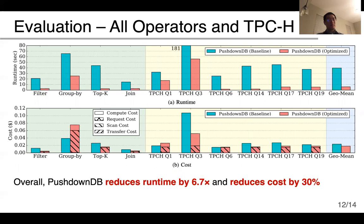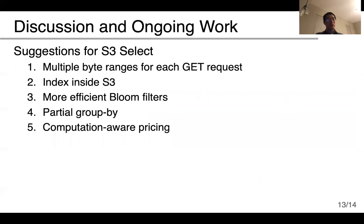Finally, this slide shows the performance comparison between baseline PushdownDB that does not use S3 Select and the optimized PushdownDB that does use S3 Select. We report individual operators including filtering, group-by, top-k, and join, as well as a subset of TPC-H queries, with both runtime and cost breakdown reported. Overall, by exploiting S3 Select, PushdownDB can reduce runtime by 6.7 times and reduce cost by 30%. In the paper, we also discuss suggestions to S3 that could further improve performance, including support of multiple byte ranges per GET request, adding indexing to S3, supporting more efficient bloom filters, supporting partial group-by, and offering a computation-aware pricing model.